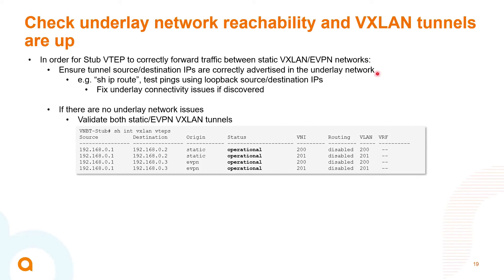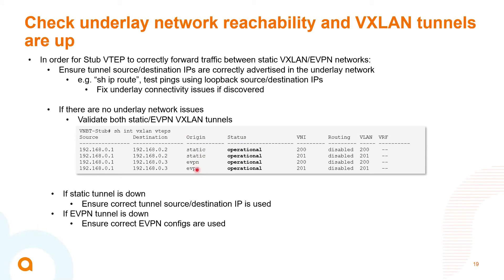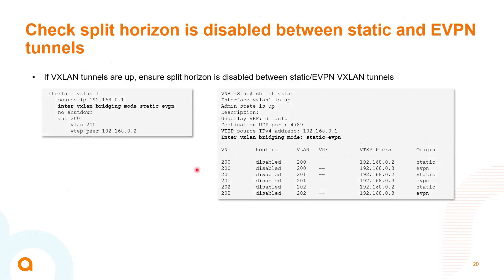If there are no underlay issues, check the tunnels using show interface VXLAN VTAPs. Make sure all tunnels are operational — on the Stub VTAP you'll see both static and dynamic eVPN tunnels. If a tunnel is down, verify the correct source and destination tunnel IPs in the VXLAN configuration. If the eVPN tunnel is down, verify the correct eVPN configs. Then confirm split horizon is disabled between static and eVPN tunnels using the inter-VXLAN bridging mode command with the static-eVPN option, verifiable via show interface VXLAN.